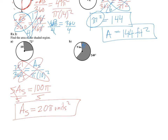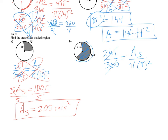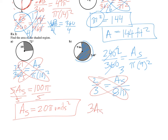Next problem: find the area of the sector. The arc measure is 240 degrees. We set up 240 over 360 equal to the area of the sector over pi times 9 squared, which is 81 pi. Simplifying 240 over 360 gives two-thirds. Cross-multiplying: 3 times the area of the sector equals 162 pi. Dividing by 3, the area of the sector equals 54 pi inches squared.